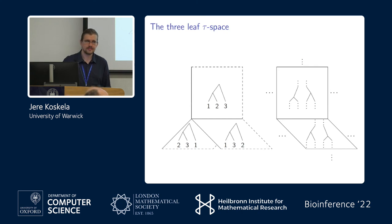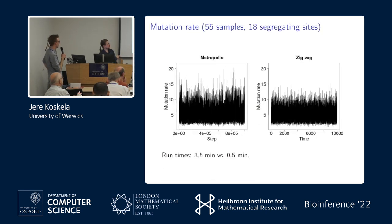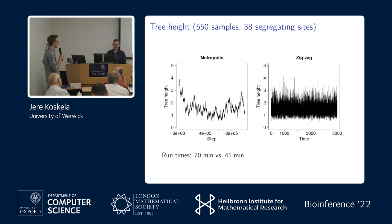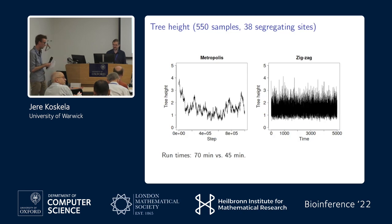Question: did you look at convergence diagnostics like R-hat? Not particularly — you can sort of see what they would say from the trace plots. For a wider battery of simulations you'd want a more automated numerical check. Final question: has anyone tried the tau space idea for clustering configurations? I don't know — I'll take a look. Thank you.